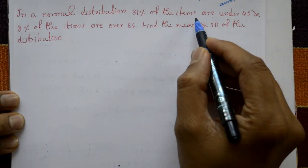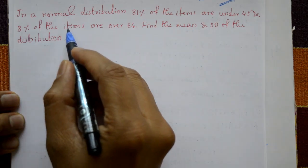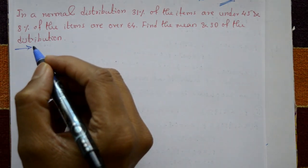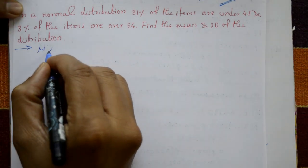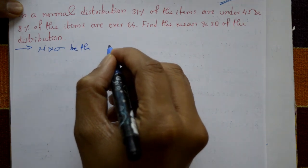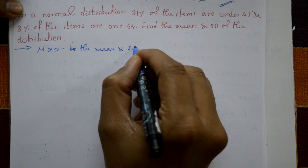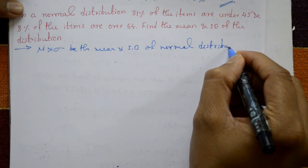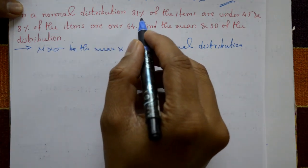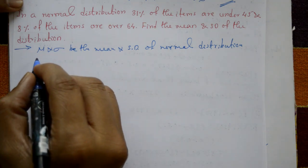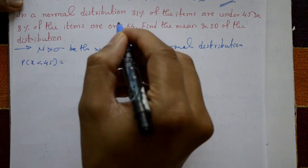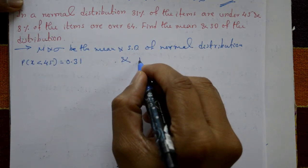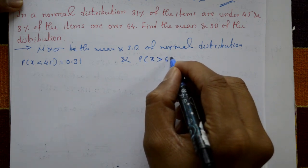In a normal distribution, 31% of the items are under 45 and 8% of the items are over 64. Find the mean and standard deviation of the distribution. This is a normal distribution. Let mu and sigma be the mean and standard deviation. 31% of the items are under 45 means probability of X less than 45 is equal to 0.31. 8% of the items are over 64 means probability of X greater than 64 is equal to 0.08.